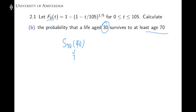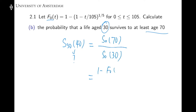Here we need to use a very important expression we learned in class. Essentially, this is a conditional probability — the probability that somebody survives to age 70 given this person already survived to age 30. Writing this down, it is S0(70) divided by S0(30), and the survival function is one subtract the CDF. We can plug in the definition of F0 to calculate this.